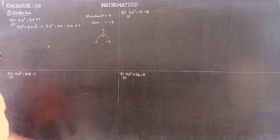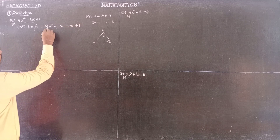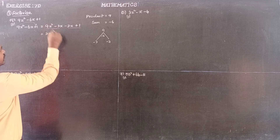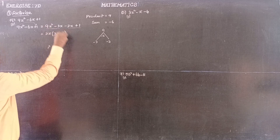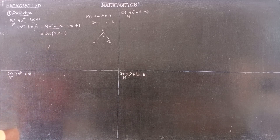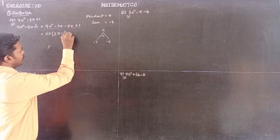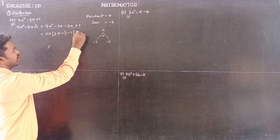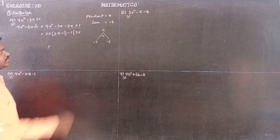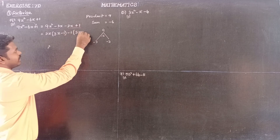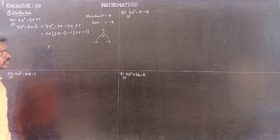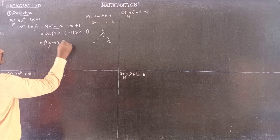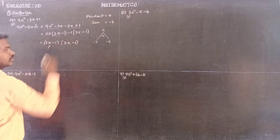The last term is plus 1. Now we group and find common factors. In the first group, 3x is a common factor, giving 3x(3x minus 1). In the second group, minus 1 is common, giving minus 1(3x minus 1).